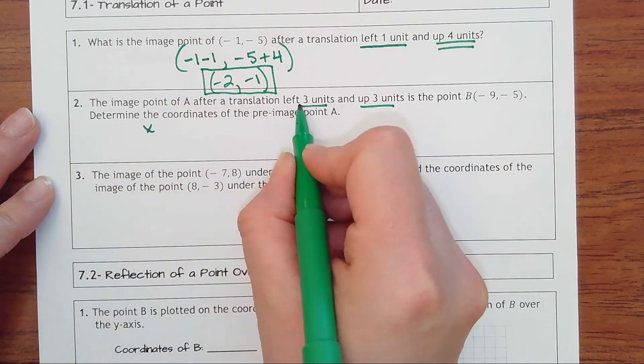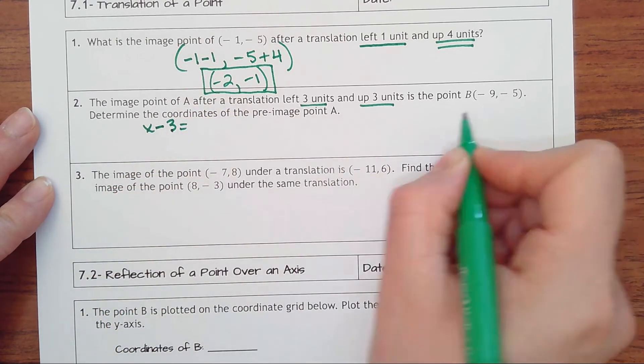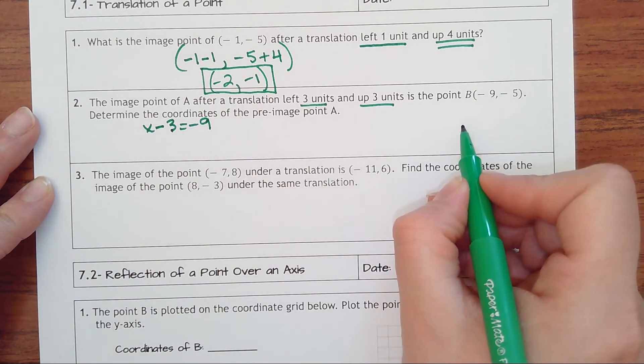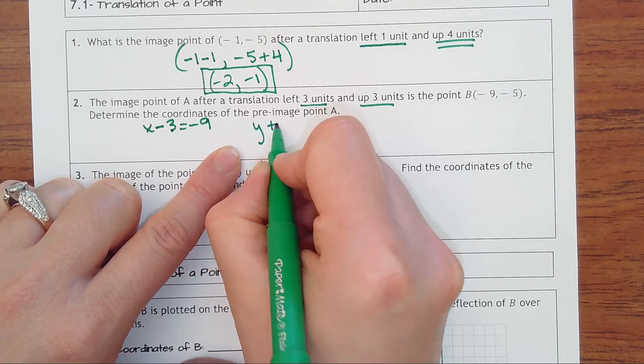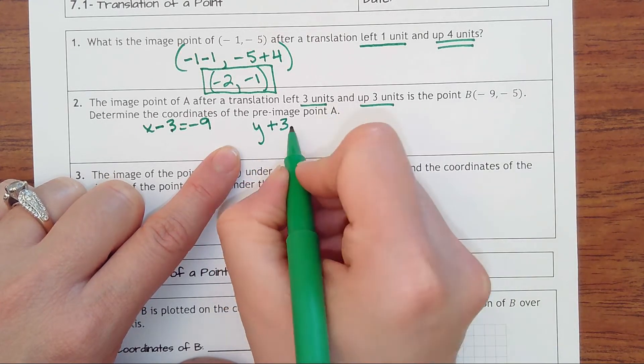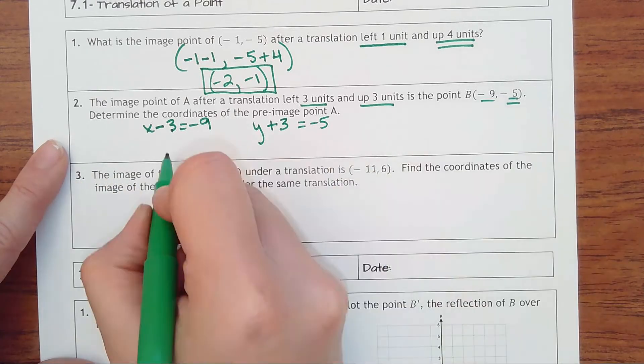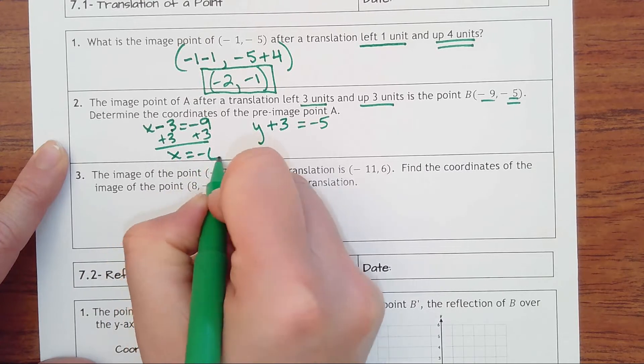So you could use algebra for this. You could say that some x value got moved to the left, so that would be a -3, and we resulted in -9. And some y value went up three units, so it would be a plus in the positive direction and resulted in -5. You could do that and solve. This would be -6 and -8.